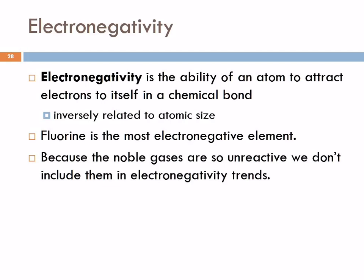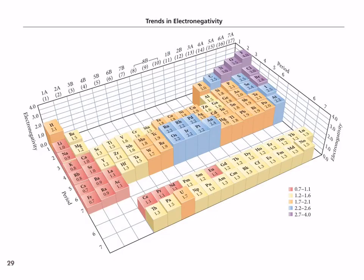Fluorine is the most electronegative element — his house is just tricked out; it's the best place to be. We don't consider the noble gases in terms of electronegativity because they are so unreactive; some don't form compounds at all and the others you pretty much have to force, so they're just not on the scale. Here is an elevation view of the periodic table in terms of electronegativity. Generally speaking, as we go toward fluorine we're getting more electronegative. Going across a period, electronegativity increases. Going up a group, electronegativity increases. If you're getting closer to fluorine, you're more electronegative than something farther away.